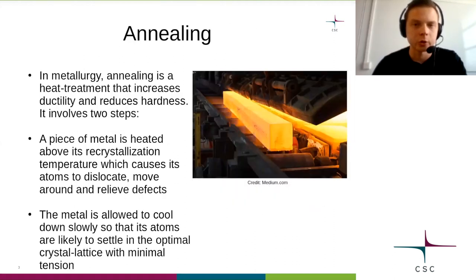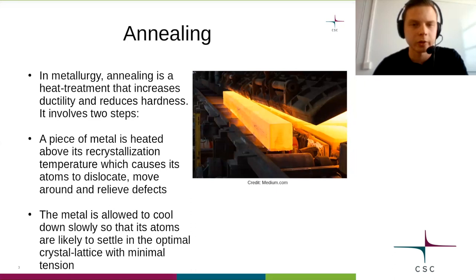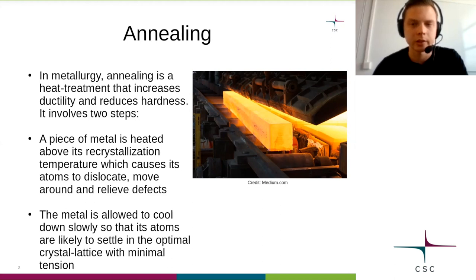Let's start unraveling the quantum annealing concept by seeing where the term annealing comes from. In metallurgy, annealing is a long known heat treatment method that increases the ductility and reduces the hardness of a metal, making it easier to mold. Annealing is a two-step process. First, a piece of metal is heated to high temperatures above its re-crystallization temperature. Beyond the re-crystallization temperature, the atomic bonds of the metal break and the atoms start to move around. Ideally the atoms are fixed in a perfect crystal lattice, but in reality there are always some defects and sub-optimal configurations.